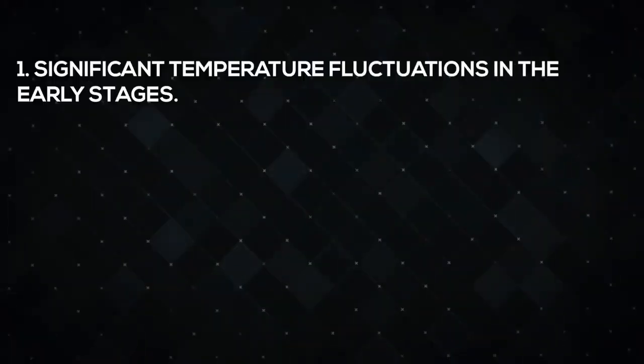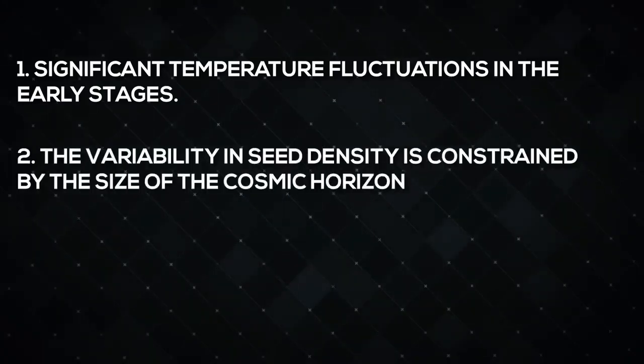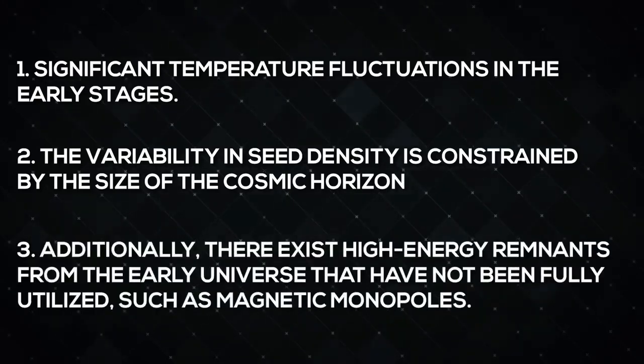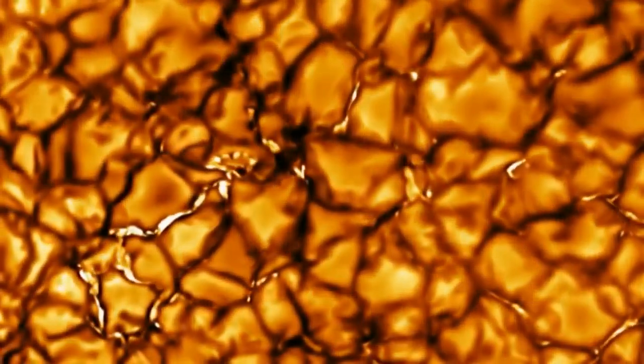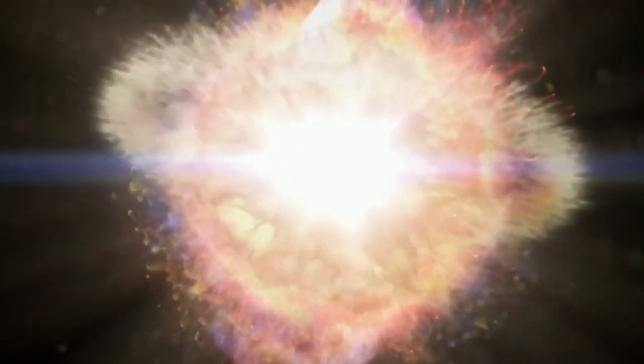These are: 1. Significant temperature fluctuations in the early stages. 2. The variability in density is constrained by the size of the cosmic horizon. 3. Additionally, there exist high energy remnants of the early universe that have not been fully utilized, such as magnetic monopoles. These signs that scientists were expecting to see are totally missing. This is a big deal because it implies that the universe didn't reach the really high temperatures that were previously assumed. It seems that something else happened before the Big Bang to set things up the way they are now.